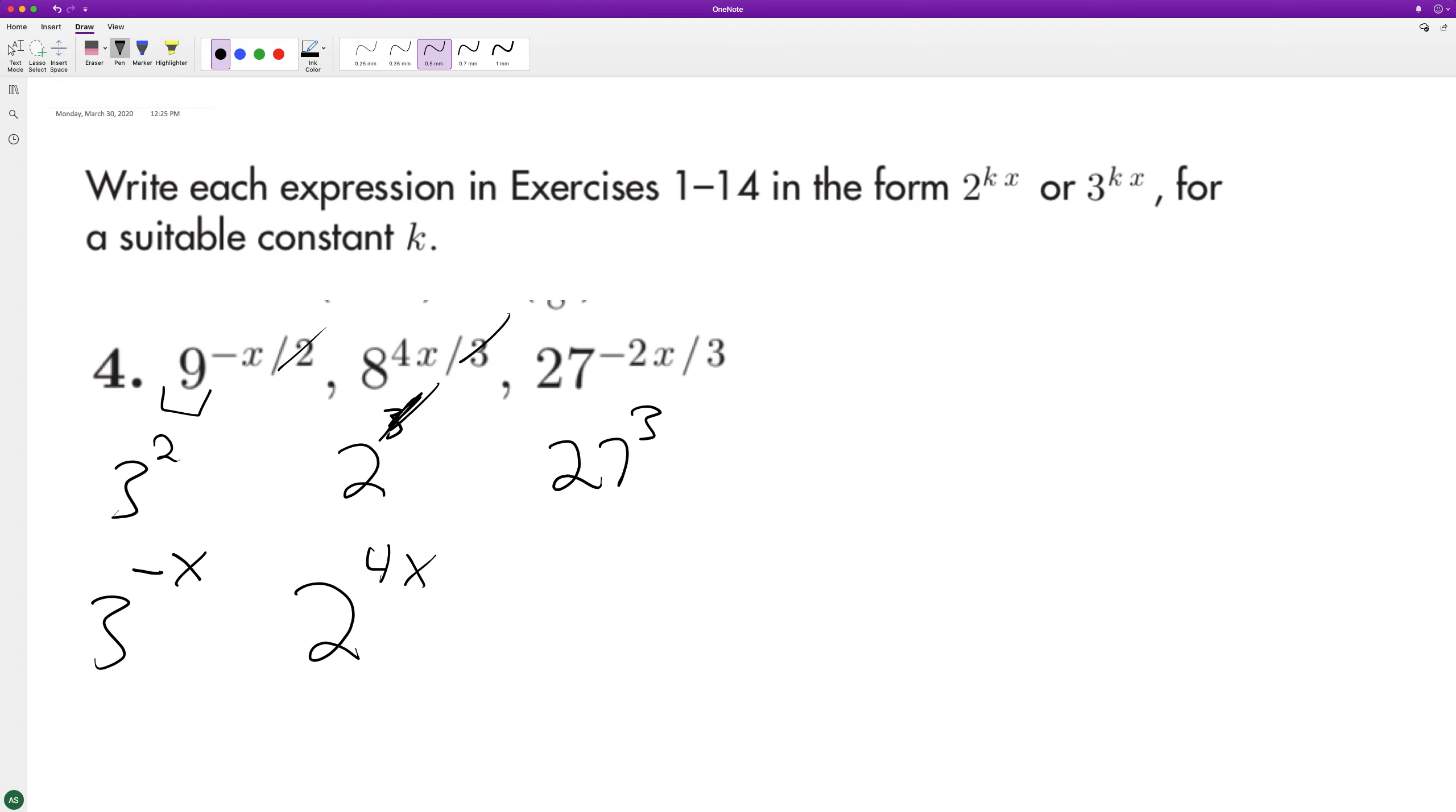And here, 3s cancel out, so we end up with just... Excuse me, this should have been 3. I don't know. My mind skipped a beat. It should be 3. So this is 3 raised to the negative 2x.